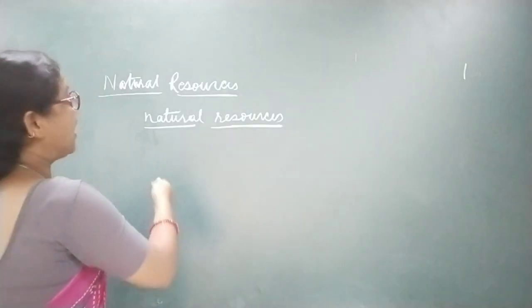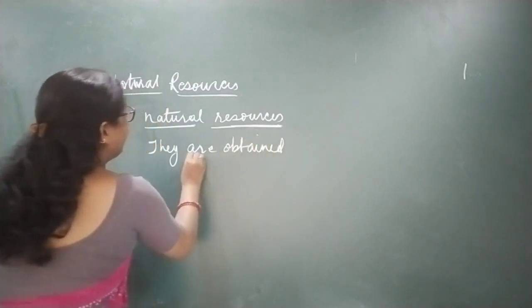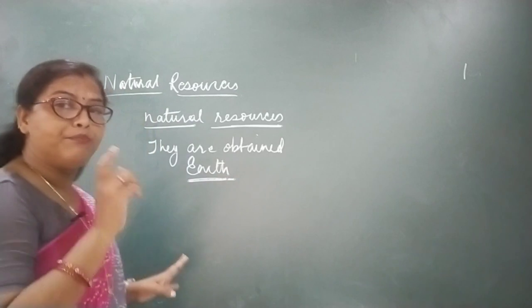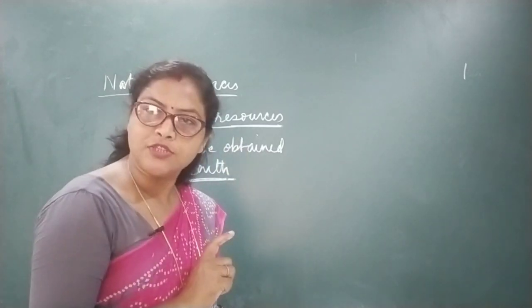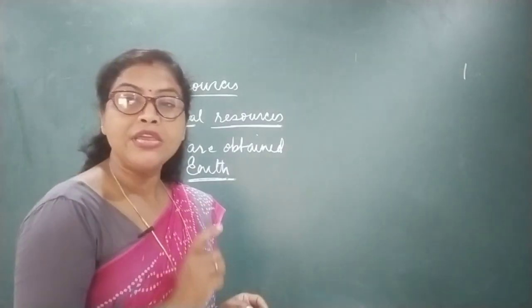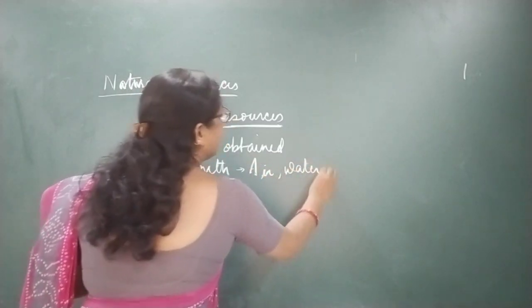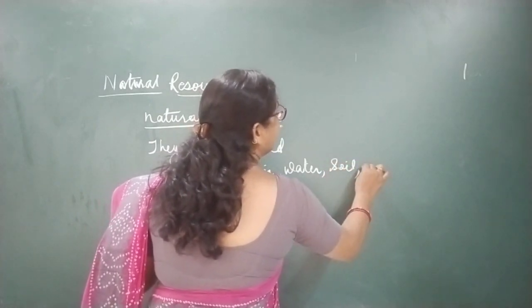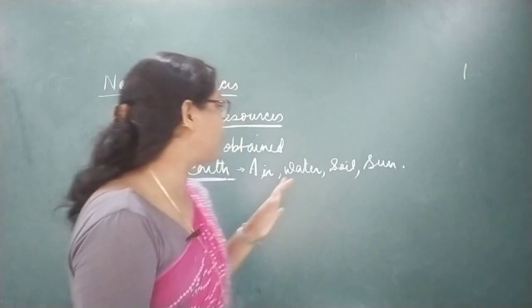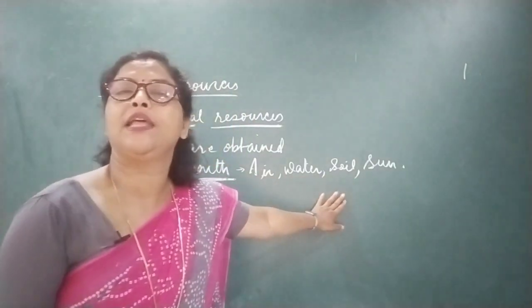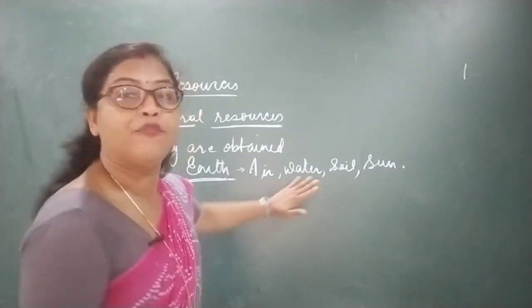These natural resources are obtained from earth. We may also call these natural resources as earth resources, because we get them from the earth. Those resources are air, water and soil — and you can also include light, heat, or sunlight. These all we get from earth and sun, so they are also called earth's resources.